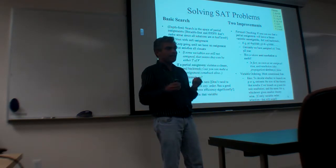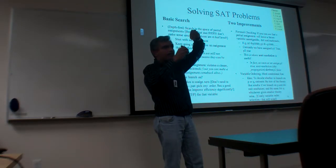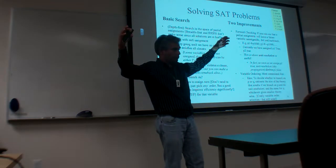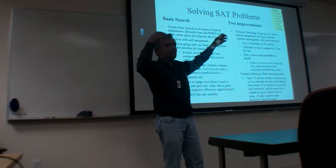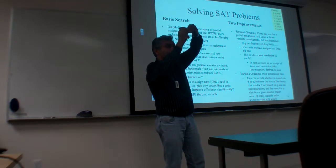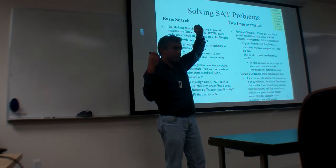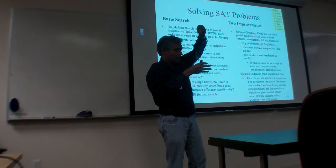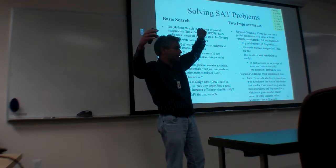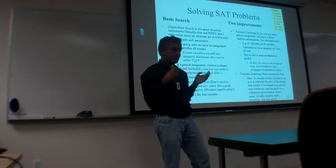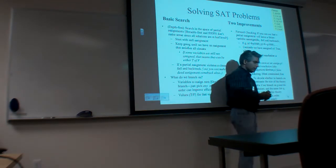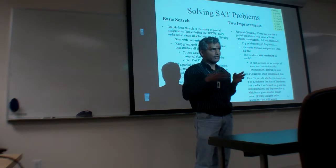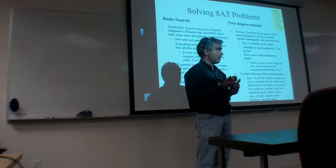Furthermore, we convinced ourselves that at each point you just have to pick one variable and consider true and false values for it — you don't have to consider all variables at all levels. You don't have to second-guess: maybe I should have branched on Q here, not P. The order in which variables are given values does not matter in terms of completeness — in terms of finding the solution.